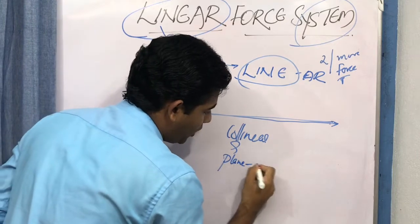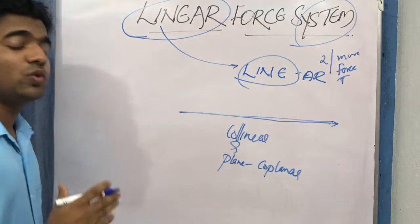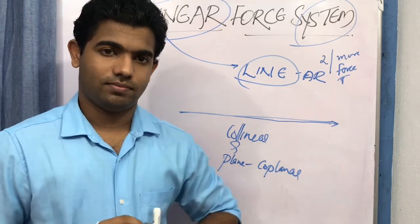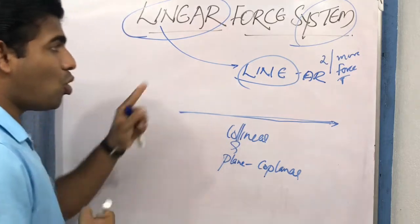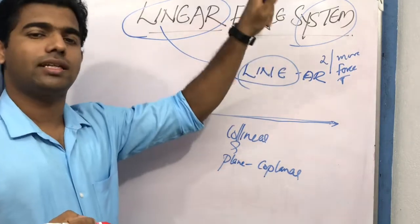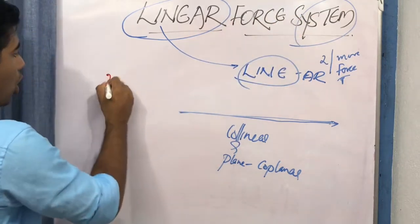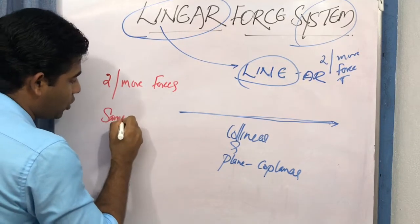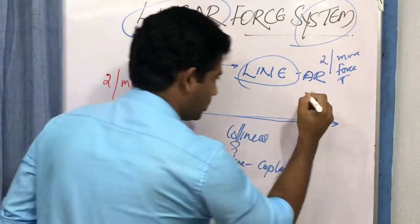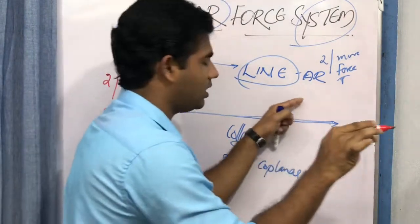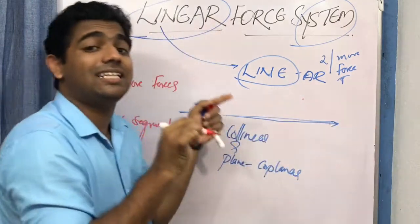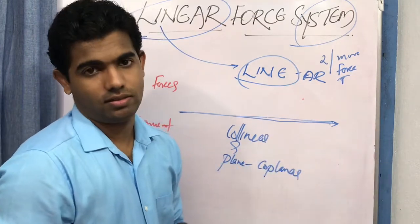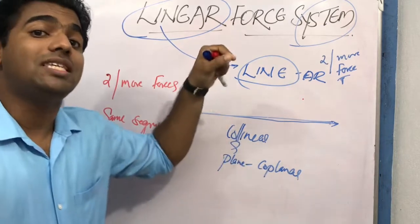When two or more forces act on the same segment and are in the same line, we call it collinear. They are also in the same plane, which we call coplanar. Those forces are considered part of the linear force system. It is important to note that the forces must act on the same segment — for example, a force on this board and another on the pillar wall are not part of the same linear force system because the segment is different.